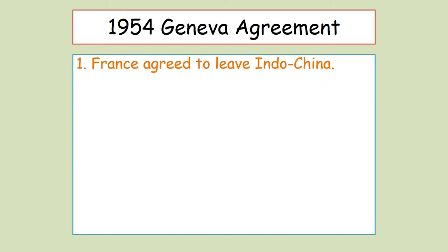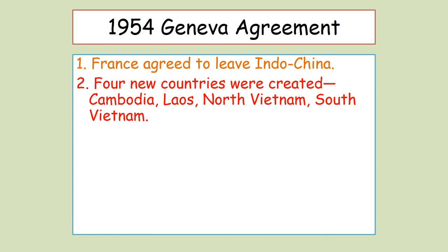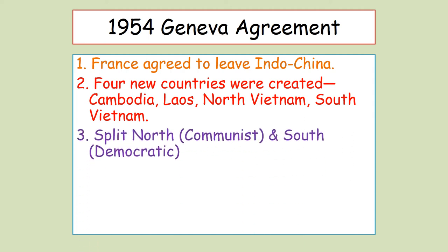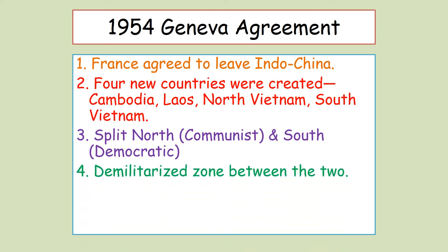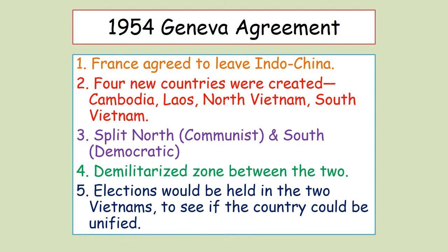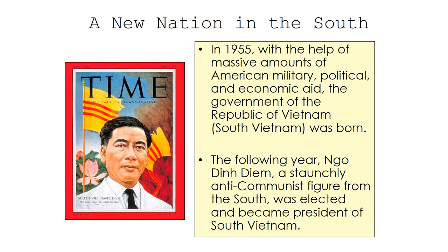This led to the 1954 Geneva Agreement, where France agreed to leave Indochina. Four new countries were created: Cambodia, Laos, North Vietnam, and South Vietnam. Vietnam was split into two - the North being communist and the South being a democracy, with a demilitarized zone between them. Elections would be held in both Vietnams to see if the country could be unified.